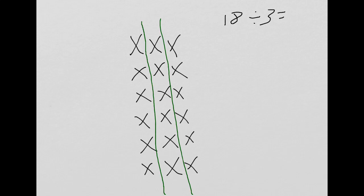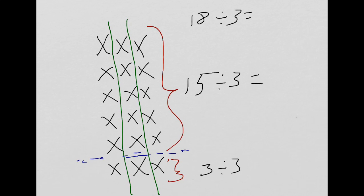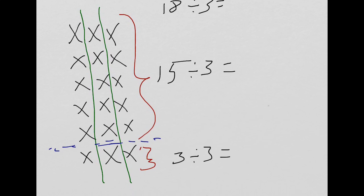The natural way to divide this array by 3 is to divide it vertically like this. And that's exactly what we're going to do. But, again, what we can use is the distributive property to divide our array into two pieces, because we're going to start working with numbers that get a little bit big for counting them all up. This part of the array, we have 15 divided by 3. And down here, we have 3 divided by 3.